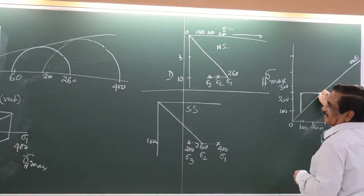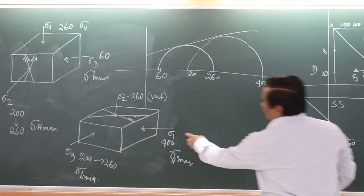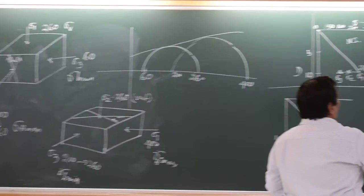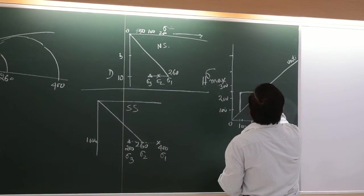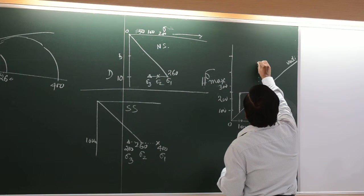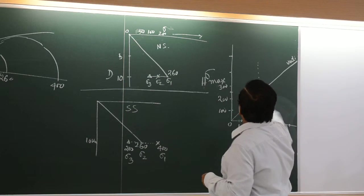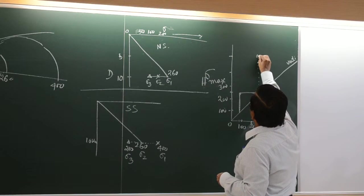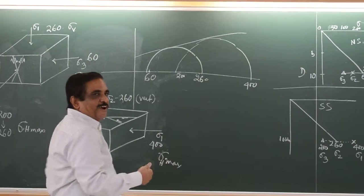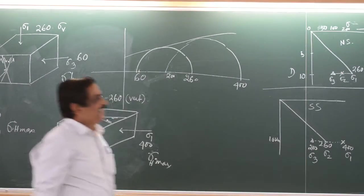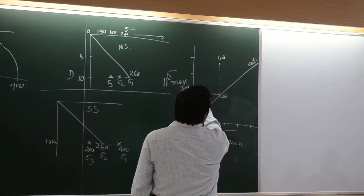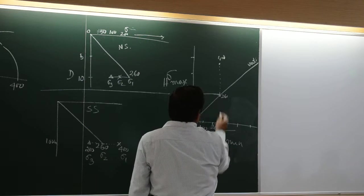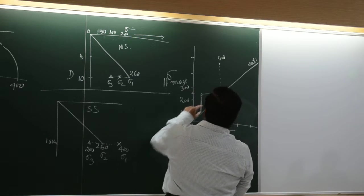So: 260, then max has to go to 400 here, has to go to 400 like this — 400 here at the point, 400. And this one, 200. The limiting is 260, so here 260. Again, minimum.